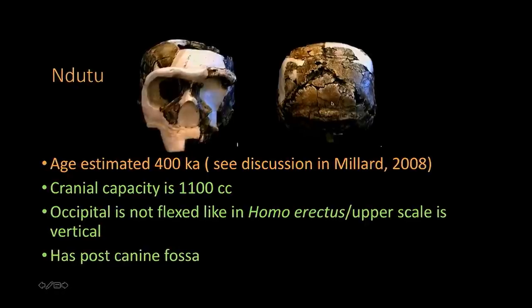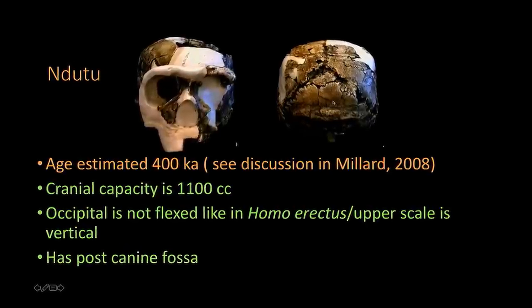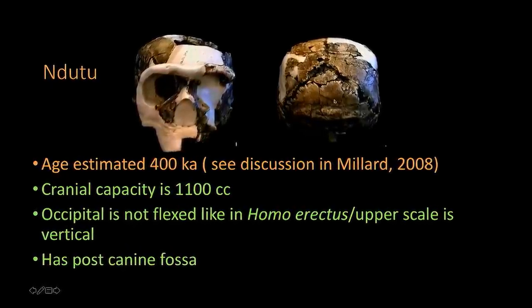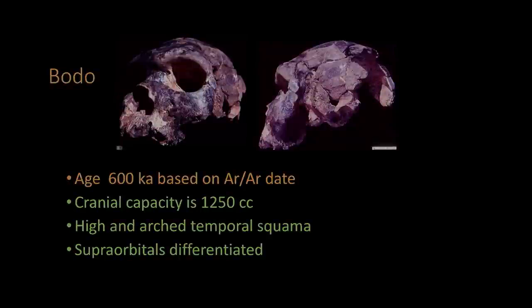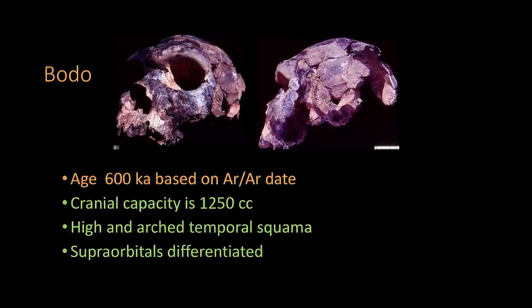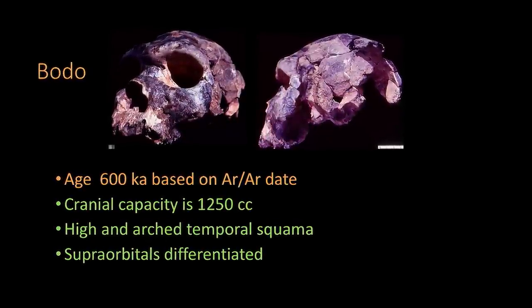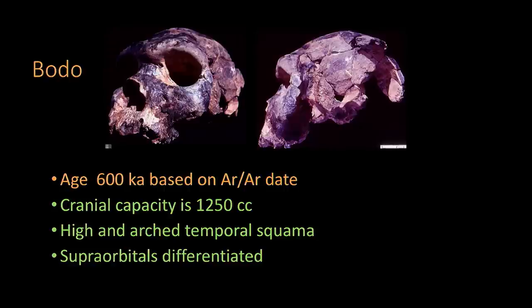For decades before its emergence, human origins research was dominated by famous discoveries: Homo erectus, including Java man and Peking man, and Australopithecus afarensis, the famous Lucy, discovered in Ethiopia in 1974.